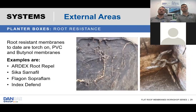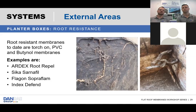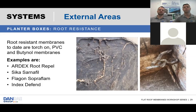Root resistance is a critical consideration for green roofs and planter boxes. Once roots find a pinhole in the wrong type of membrane, they'll attack and penetrate through it — we've even seen this with sheet membranes where an incorrect, non-root-resistant product was chosen. Once roots are seeking water, they'll find a way through. Examples of root-resistant membranes include Ardex Root Repel, Sarnafil, Sarnafil Flagkon, and Index Defend. Most PVC and butanol sheet membranes have root-resistant properties.